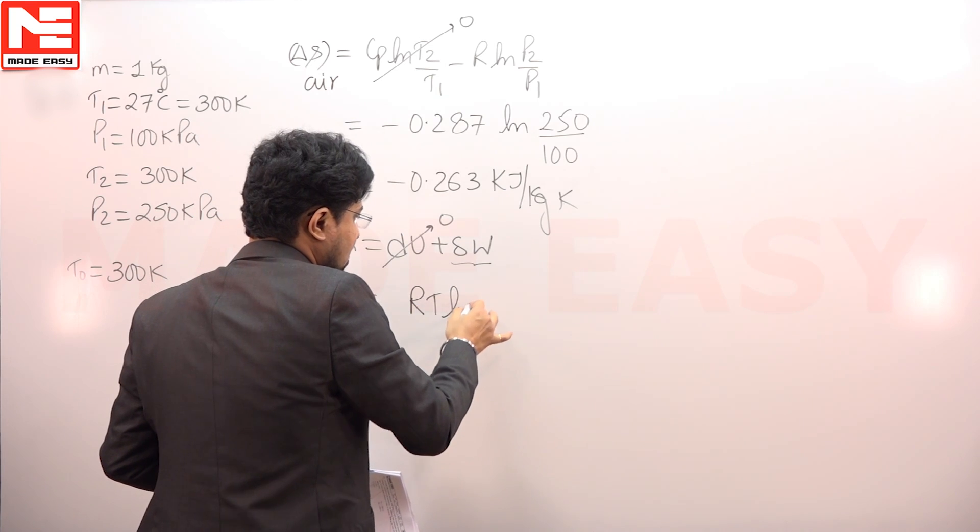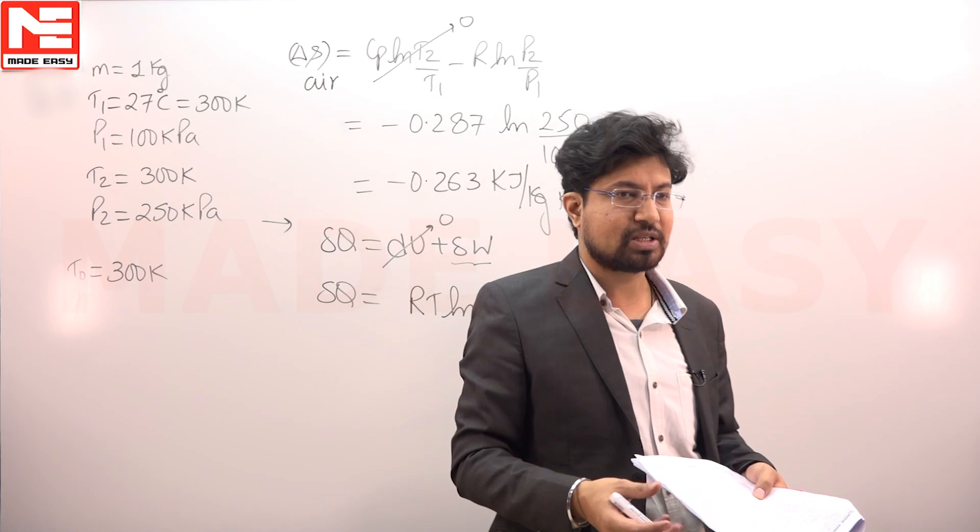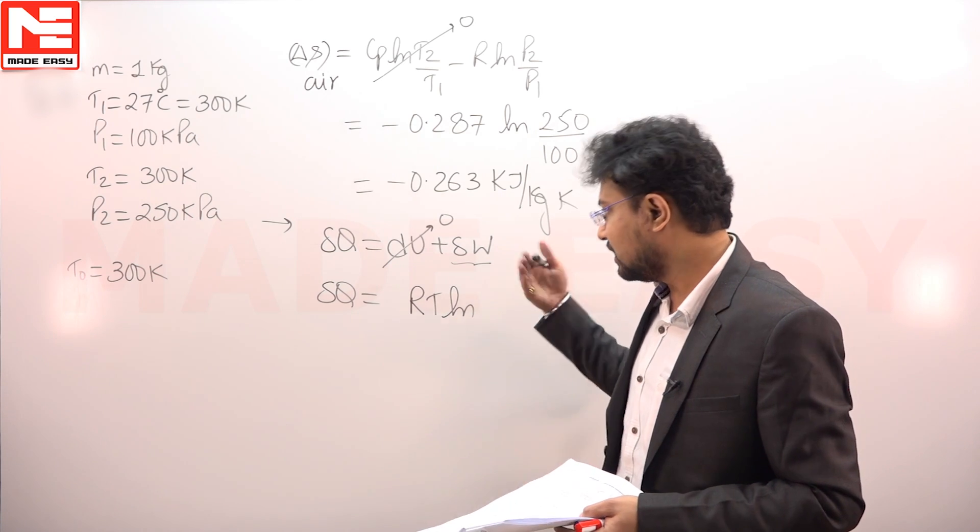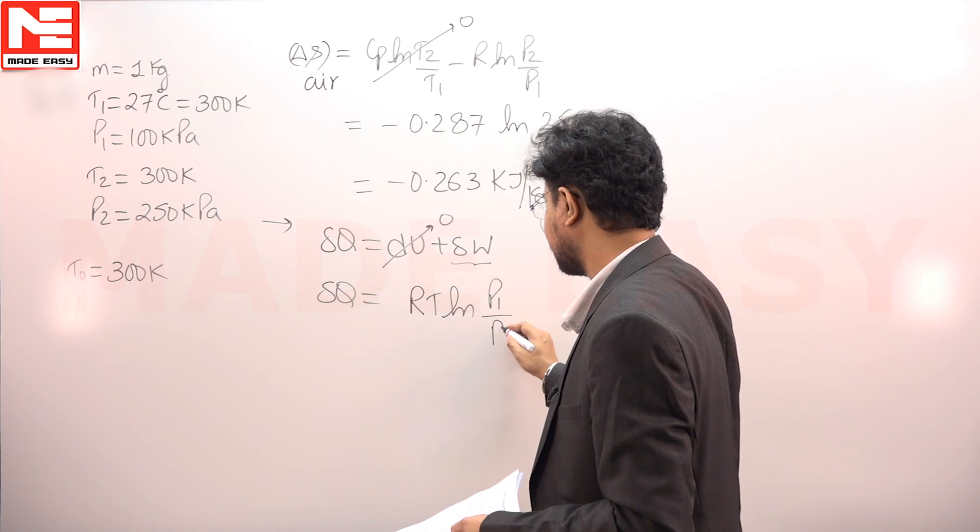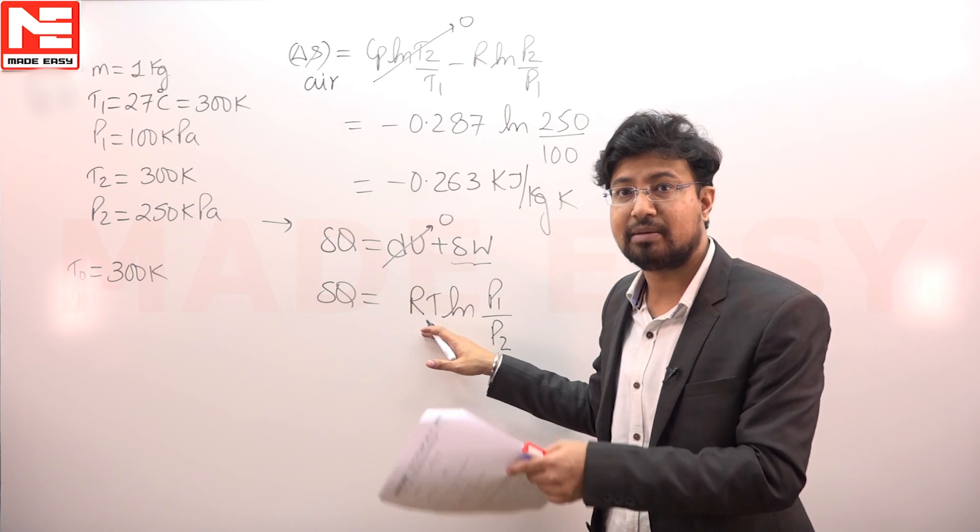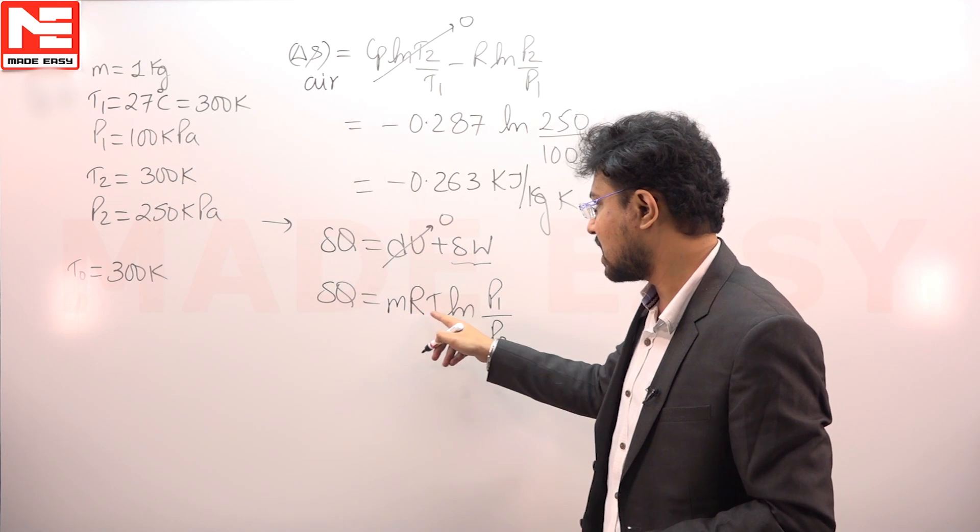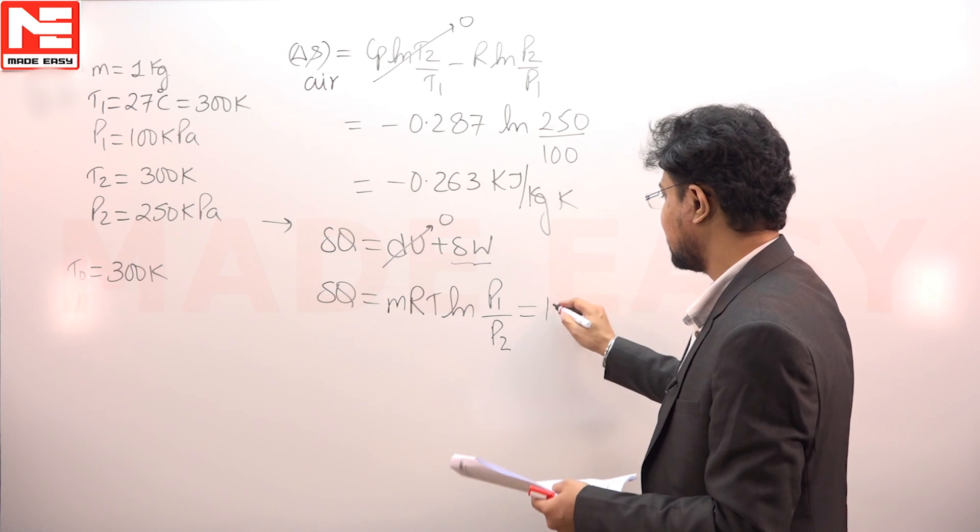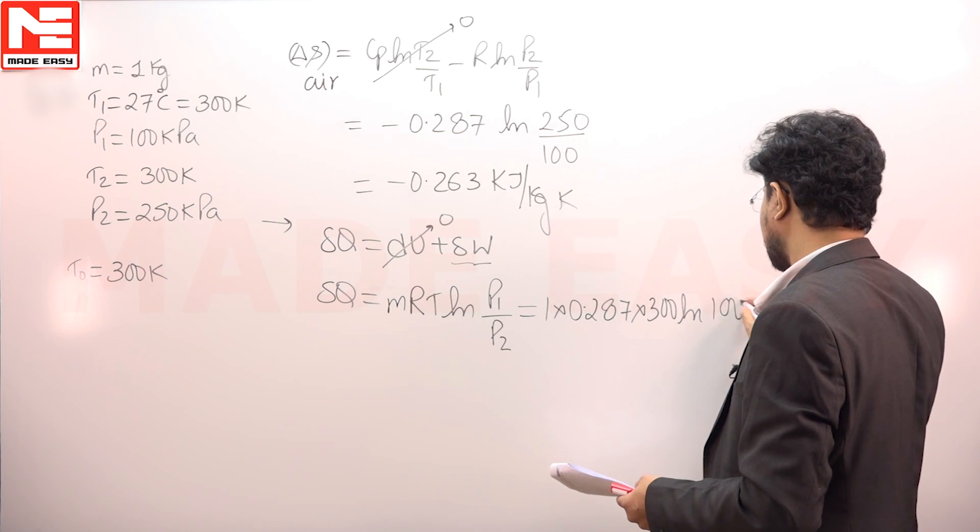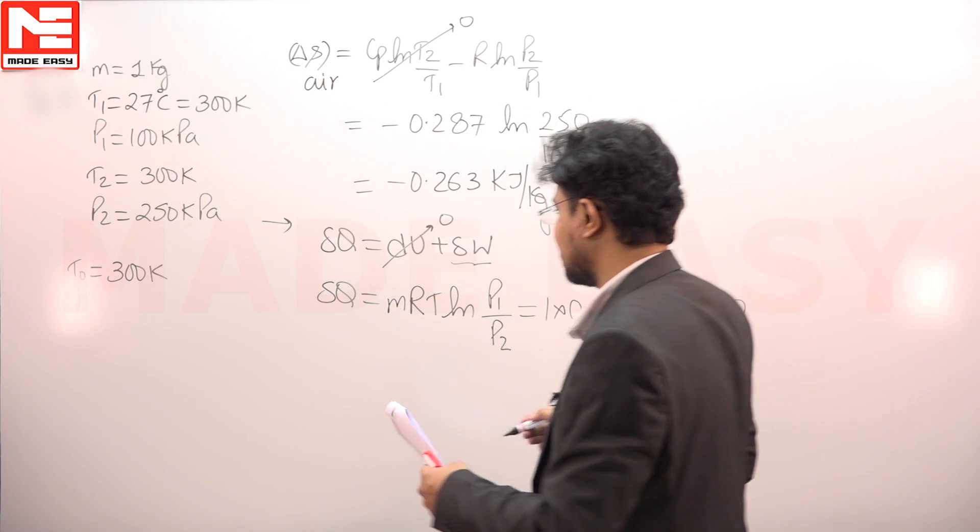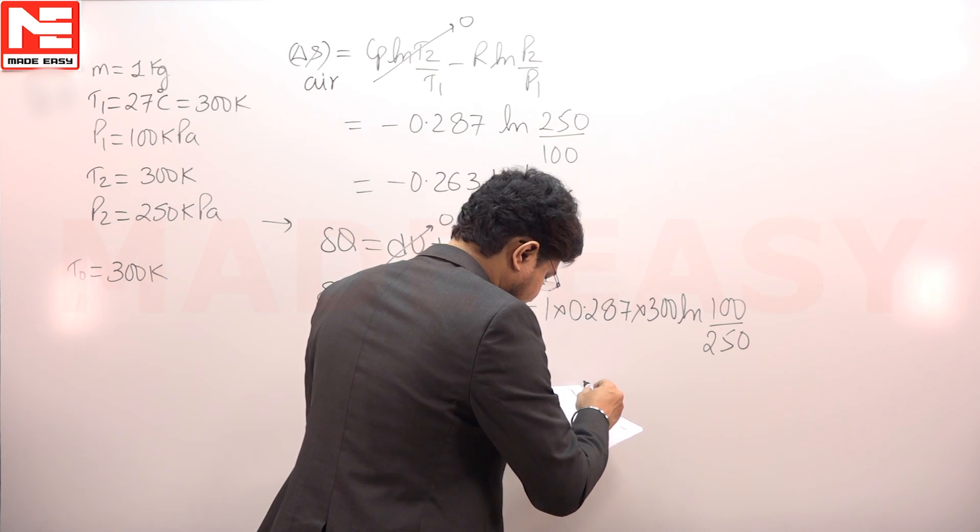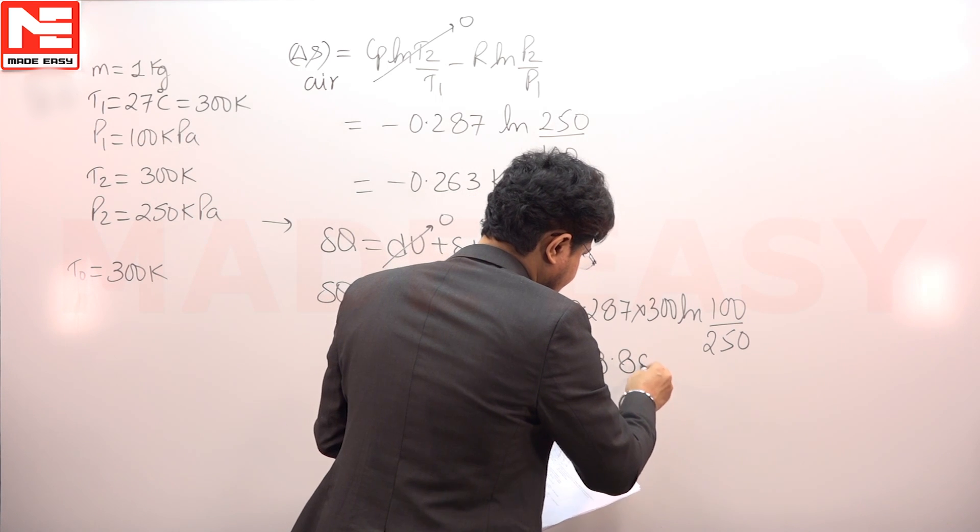The work done during this isothermal process, because temperature remains constant, can be written as RT log of final volume upon initial volume or initial pressure upon final pressure. I can write it as P1 upon P2. This constant can be written as P1 V1, P2 V2, or MRT. Mass is 1 here. We can write mass, this is 1, R into T, temperature is the temperature of the gas: 1 into 0.287 into 300 log of initial pressure 100 upon final pressure 250. We can find out the value of heat transfer. It will come out to be minus 78.89 kilo joule per kg.